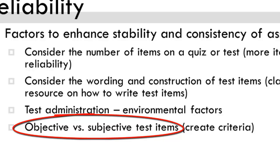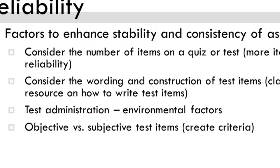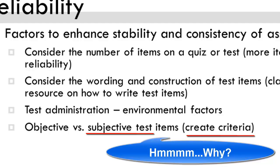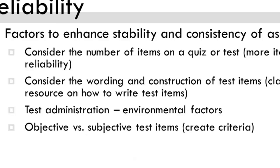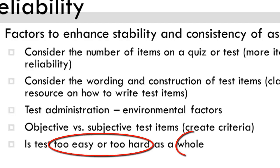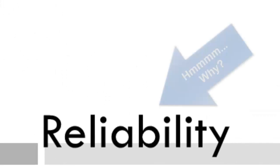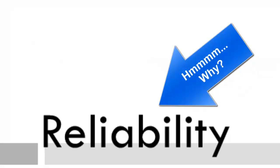What about objective versus subjective test items? If a test has multiple-choice items, there will be a correct response. But why do we need to create criteria for a more subjective type of test item, such as a short answer or essay question? Also, if your class scores are all very high or all very low, then the reliability needs to be examined. Why?